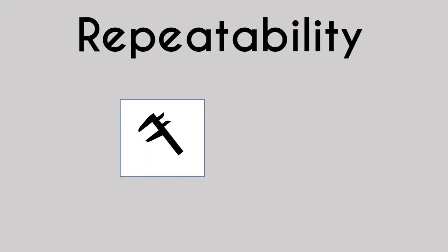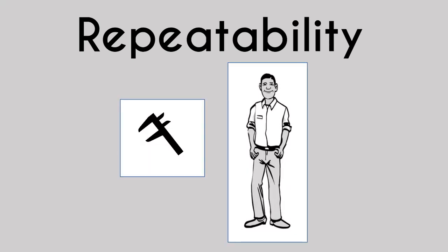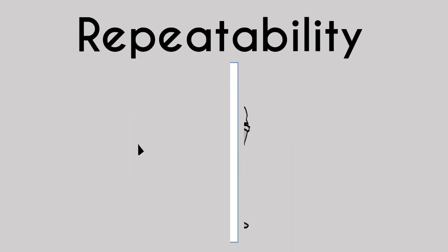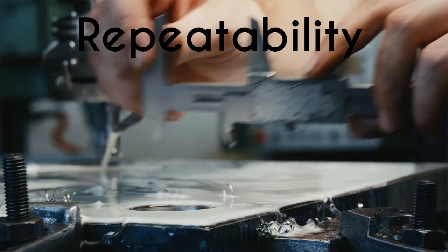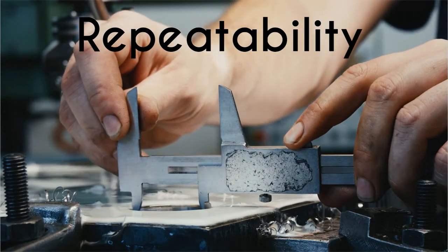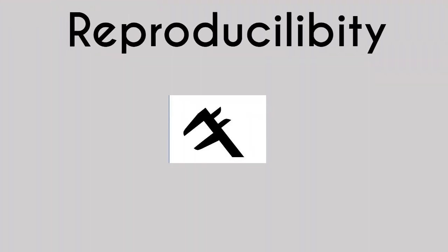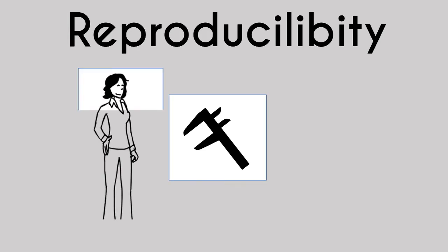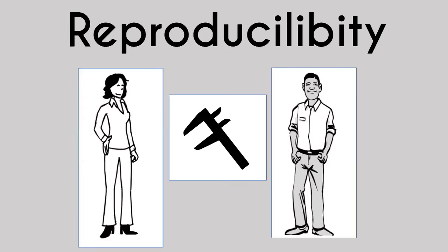Repeatability is the variation in measurement when measured by one appraiser on the same equipment in the same measurement setting at the same time. Reproducibility means the variation in measurement when measured by two or more appraisers multiple times.